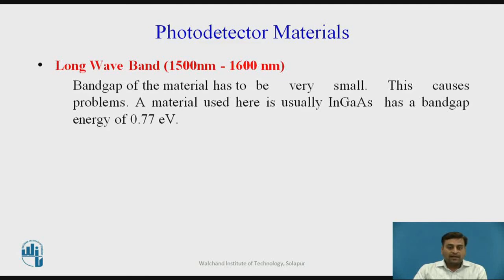For the long wavelength band, the materials of interest are ternary Group III-V alloys, such as indium gallium arsenide, with a band gap energy of 0.77 eV. The small band gap energy causes a thermal excitation problem, which can be overcome by the use of heterojunctions during material fabrication.